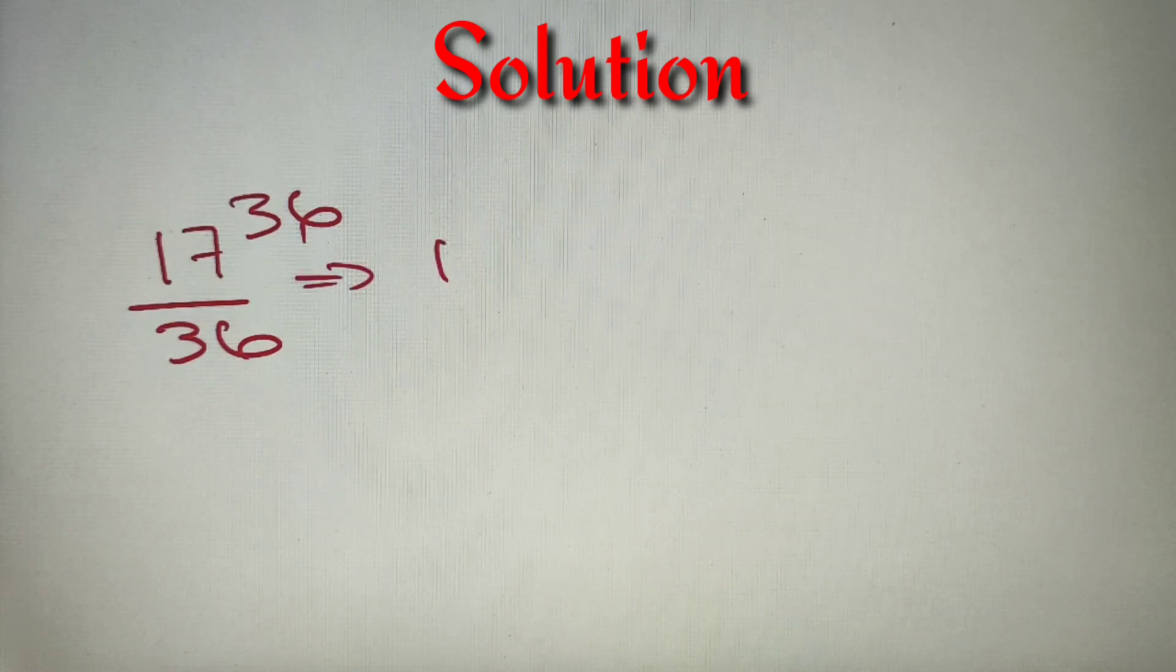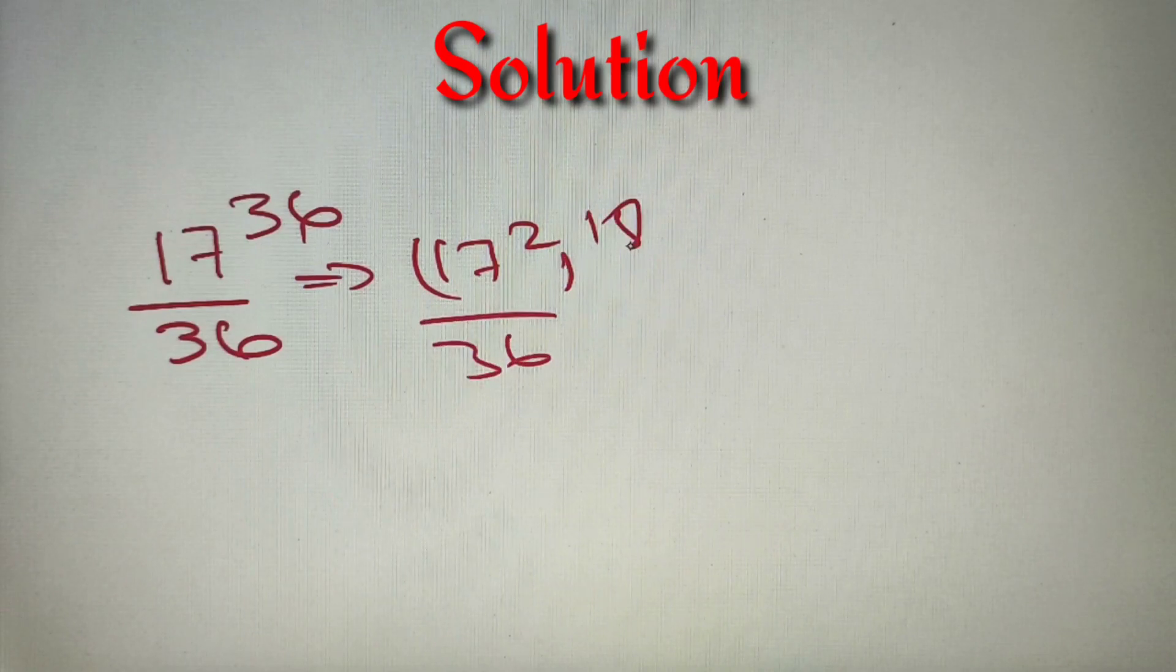We can write 17 raised to power 36 as 17 square raised to power 18, whole divided by 36, because 2 into 18 is equal to 36. So we have 17 square raised to power 18 by 36.